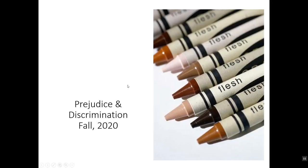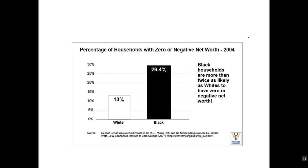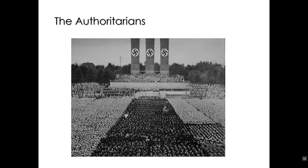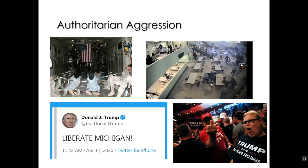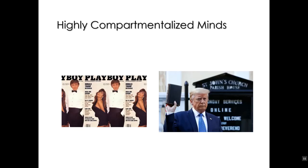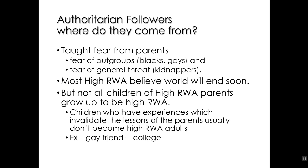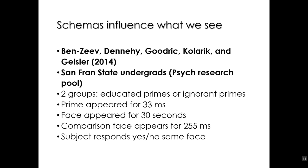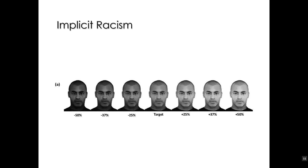Okay, hello everybody. Here we are back at the first slide. Let's power through for part number two, going through the authoritarians. And here we go, our next section of the lecture: implicit racism.